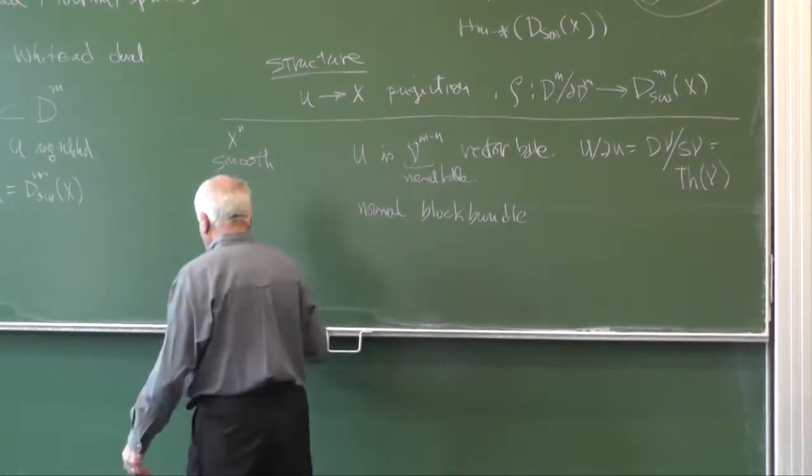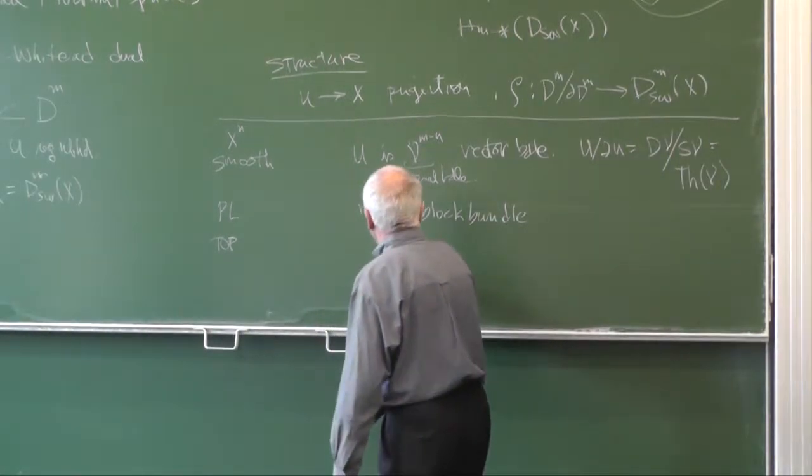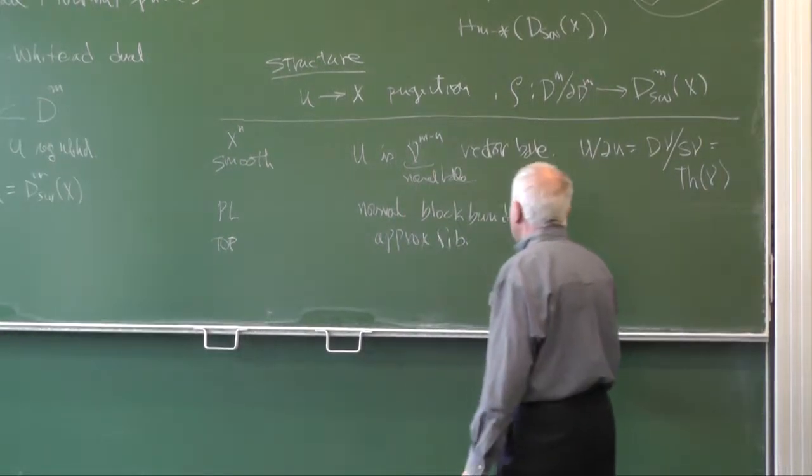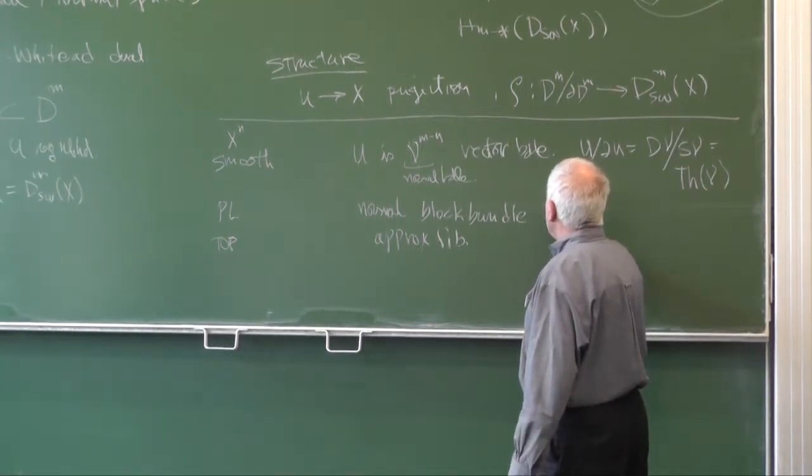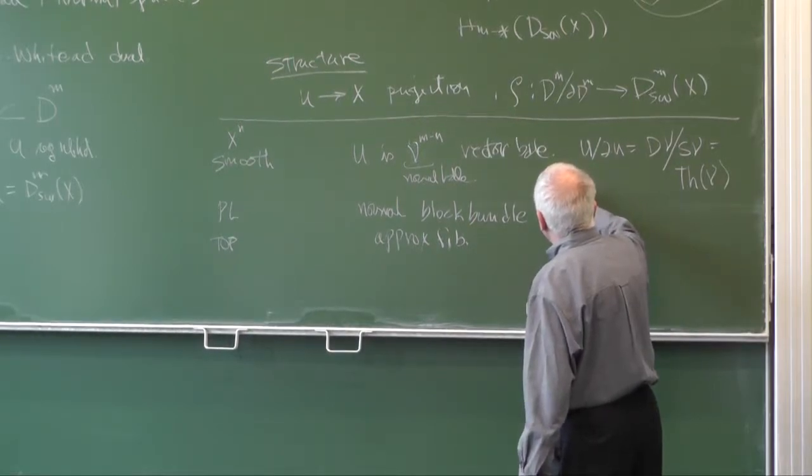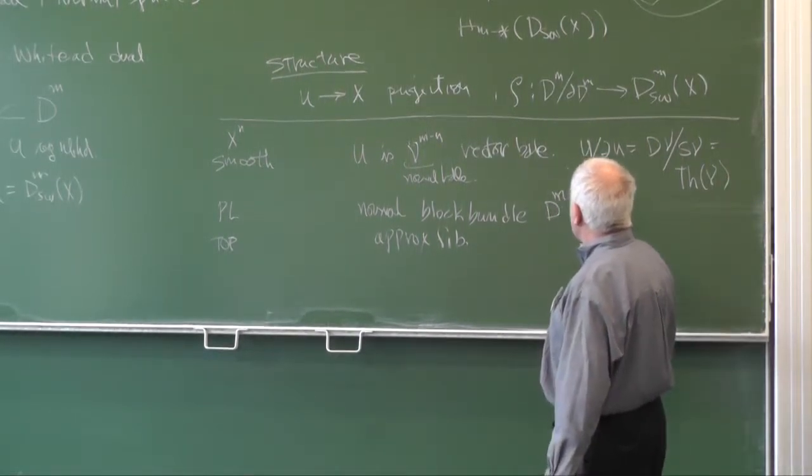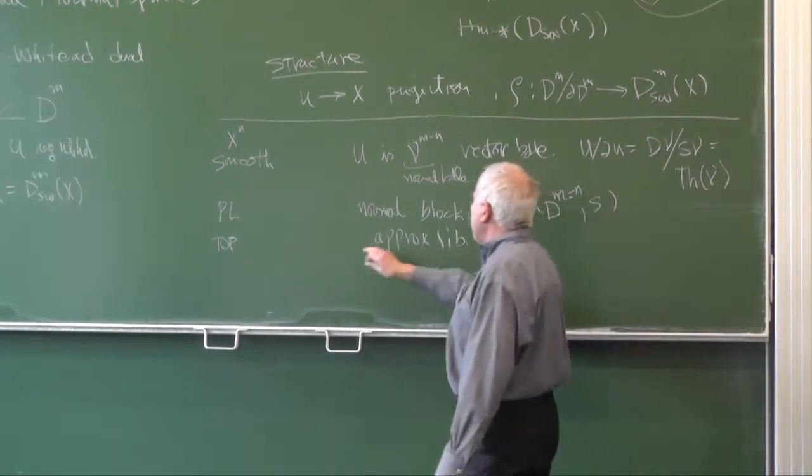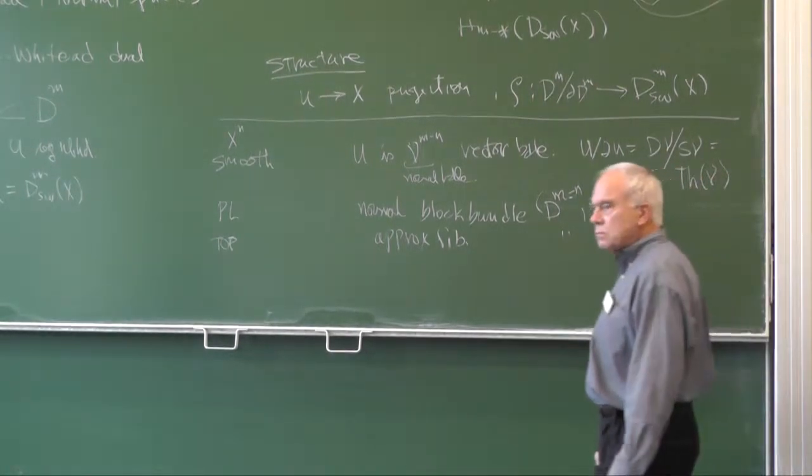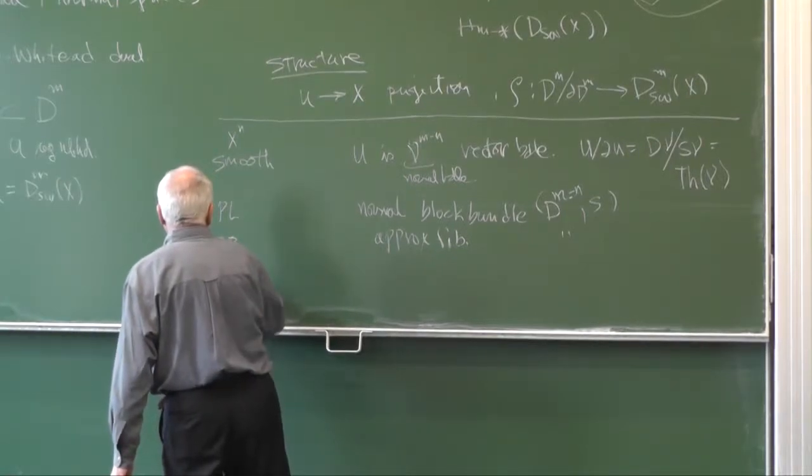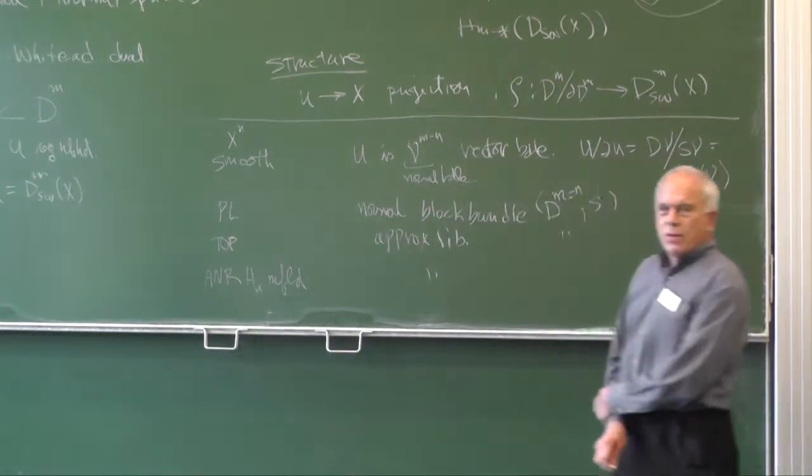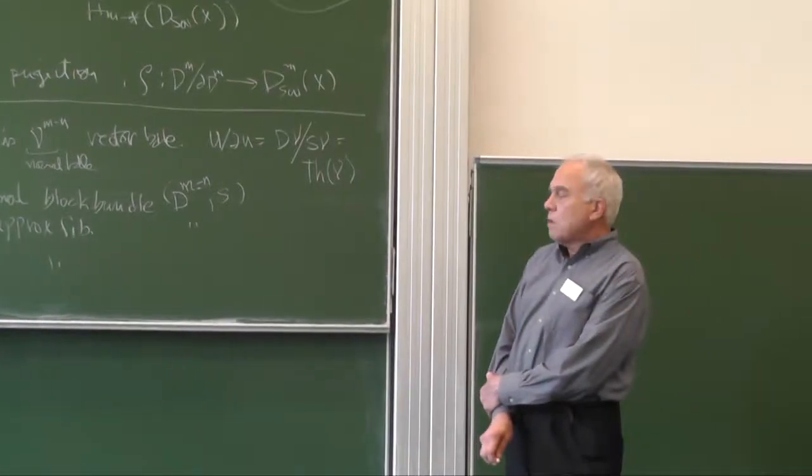If it's topological, then it's an approximate fibration with fibers V_{N-K, M-N}. If it's an ANR homology manifold, it has the same normal structure as the Čech-like manifold.